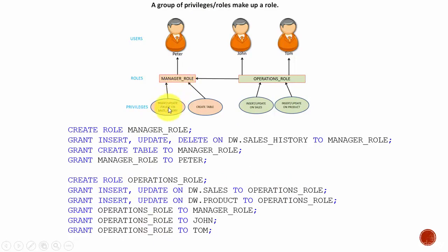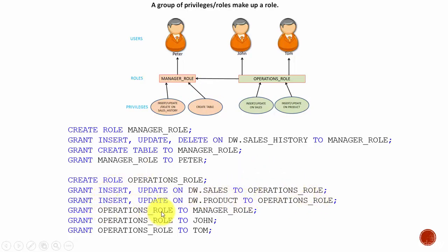First, you create the manager_role, then grant insert, update, delete on the sales history table to manager_role, then grant create table to manager_role, and then assign this manager_role to Peter. For the operations_role, you create the role, grant insert and update on the sales table to operations_role, grant insert and update on the product table to operations_role, then grant operations_role to manager_role. Finally, assign operations_role to John and operations_role to Tom. In the next session, we will use this exercise to perform the demo.